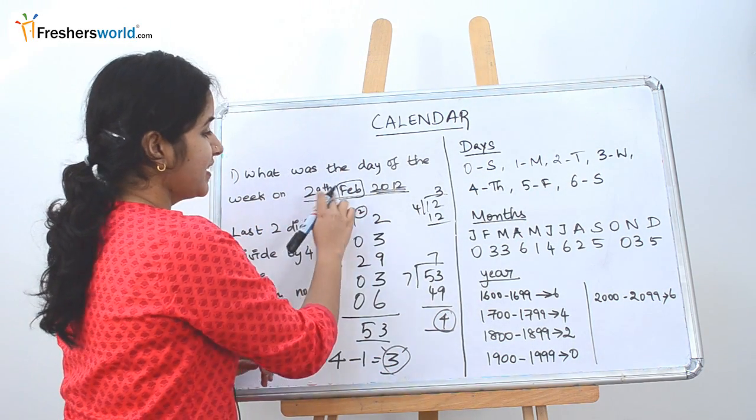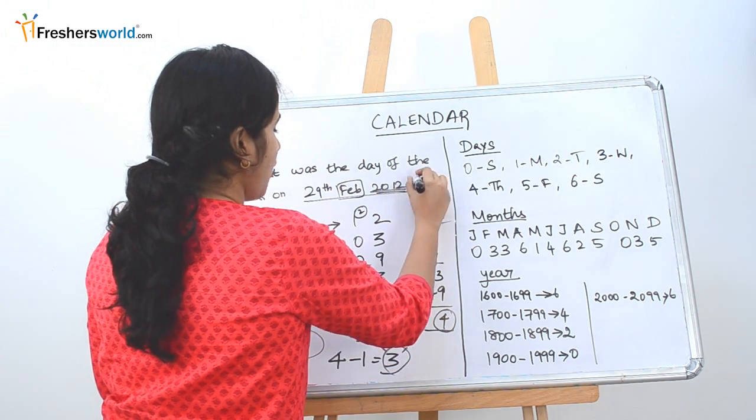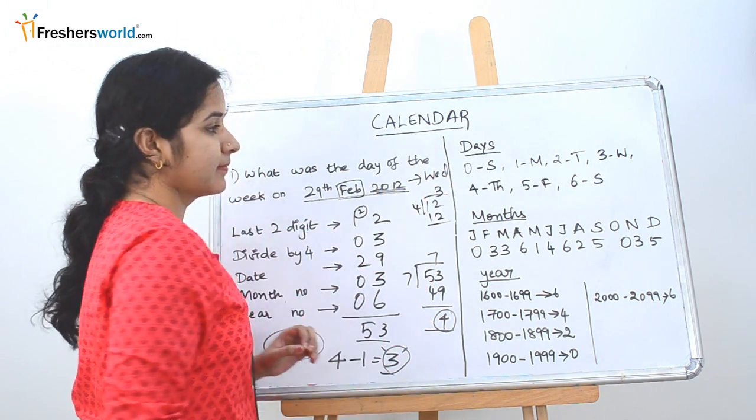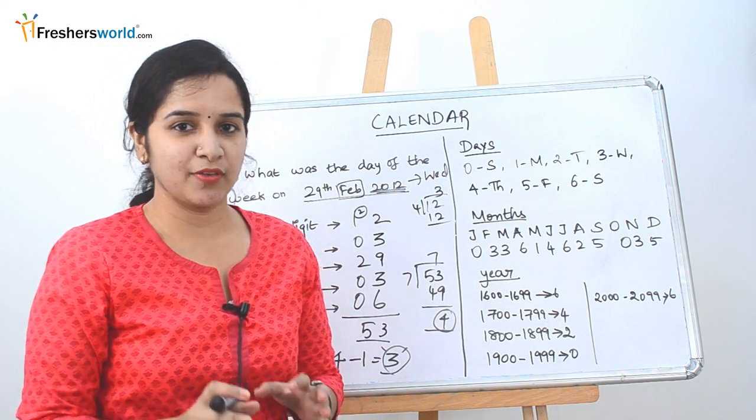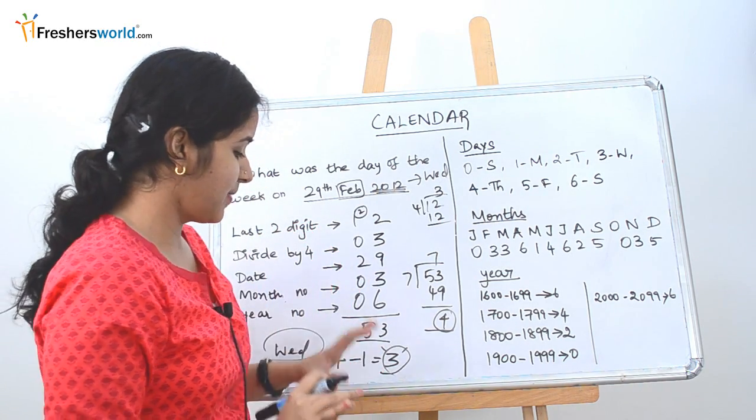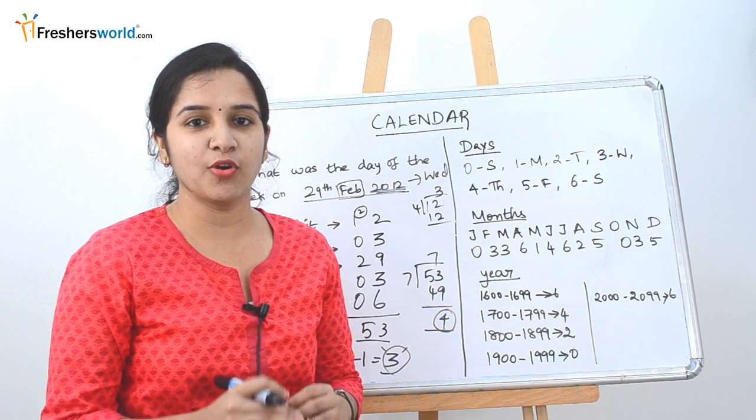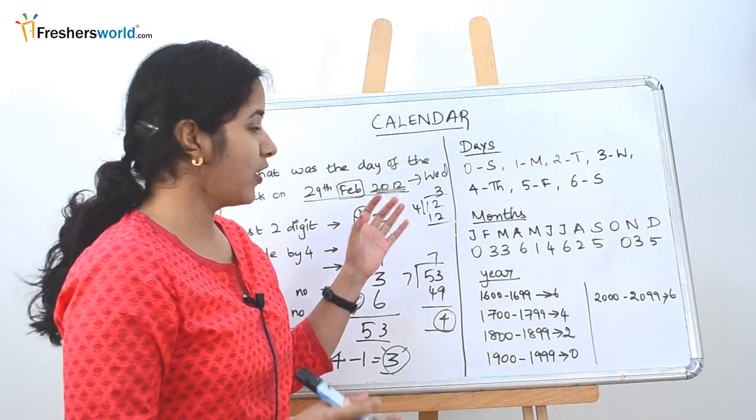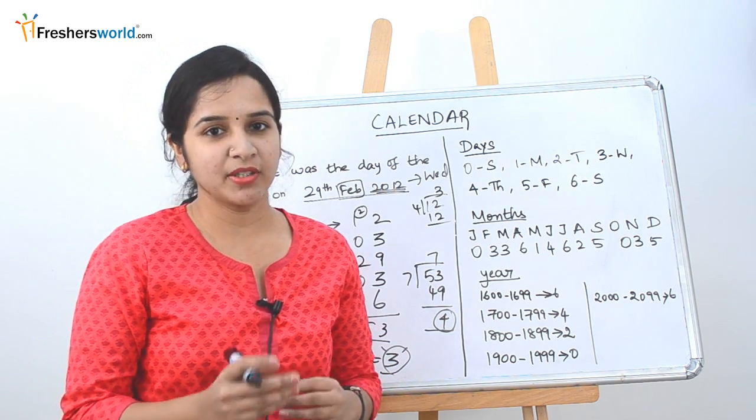So 29th Feb 2012 falls on a Wednesday. So it is the same step that we have followed for a normal year. Only minor change in the last step is that we are going to subtract it by 1. You can use the same method for any other leap year to find what day it falls on. Let's solve some other problems.